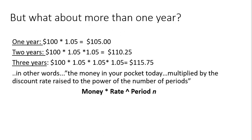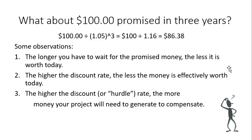This is intuitive going in the forward direction. Now let's think about it going backwards. What if your project promised to deliver $100 but in a three-year period? Remembering that rule of raising the rate to the power of the period, we have $100 divided by $1.05 to the third power, which is $100 divided by $1.16, giving us $86.38. So the effective value of $100 promised three years from now is worth only $86.38 today, assuming a 5% prevailing discount rate. That means if you had $86.38 today and saved it at 5% compounded annually, that would equal $100 in three years.